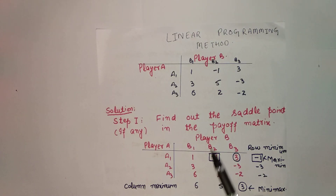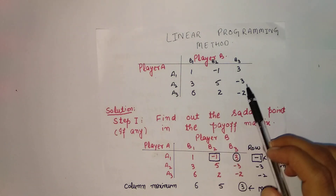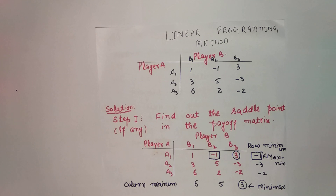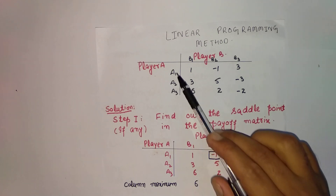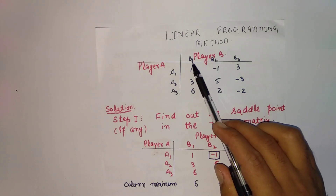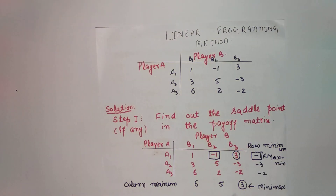We are given a 3×3 matrix. Here player A uses 3 strategies and player B uses 3 strategies.